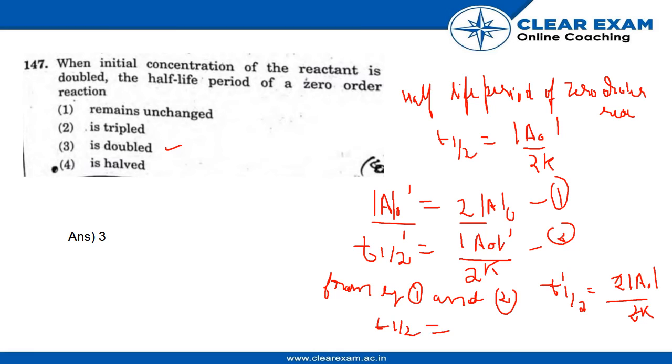Since t1/2 is A₀ by 2k, the t1/2 dash for the doubled initial concentration would be twice the t1/2. Hence, the half-life period of a zero-order reaction is doubled.